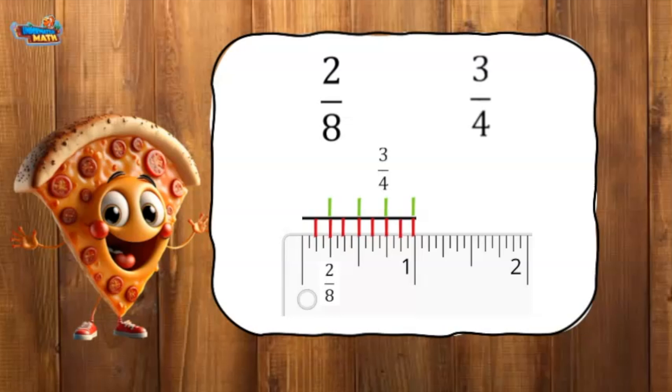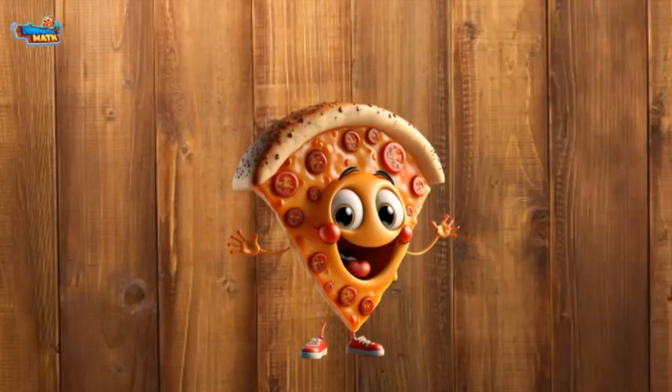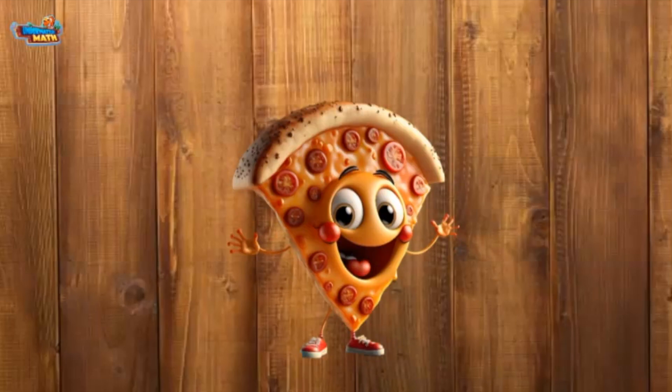Three-fourths is further along the number line than two-eighths. This means two-eighths is less than three-fourths. Fraction comparison can be made easier by using models. Enjoy your practice.